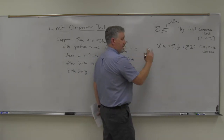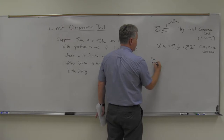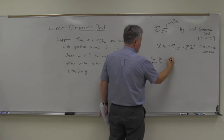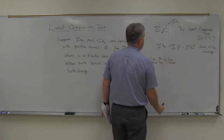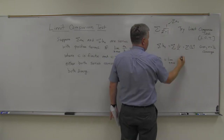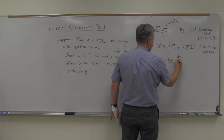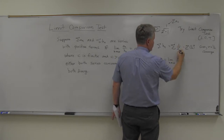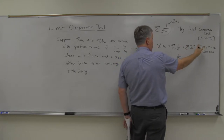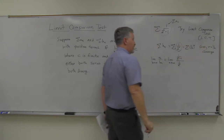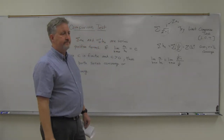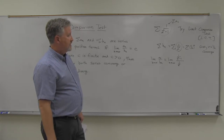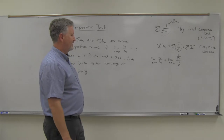Now for the Limit Comparison Test, we look at the limit as n goes to infinity of a_n divided by b_n. In this case that's the limit as n goes to infinity of [1/(2^n - 1)] divided by [1/2^n]. For this step, I'd go back to the original form to figure out that limit.